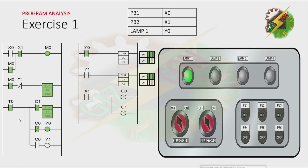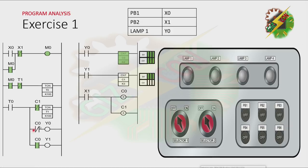And Y0 as well. And because T1 is deactivated, the normally closed contact of T1 will go back to its initial state. Because of that, T0 will be activated after 1 second again, and the cycle will repeat. Let's assume that the count value is equivalent to the set value. If so, it will make counter C0 to be activated, and it will make a signal diversion from Y0 to Y1.